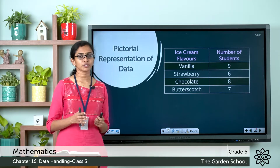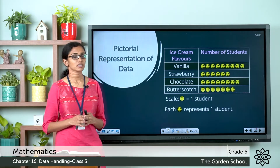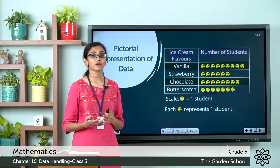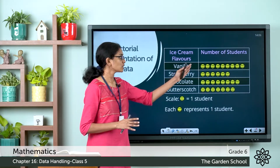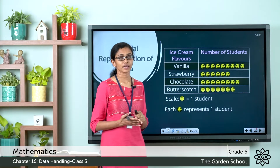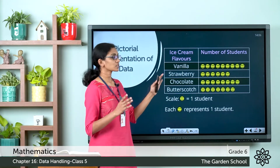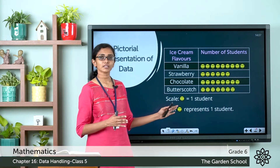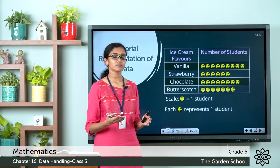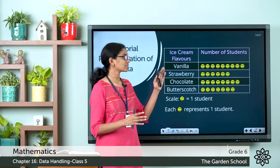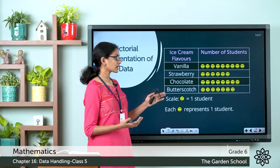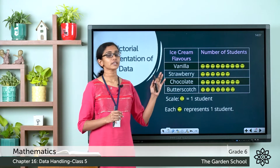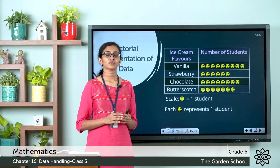Here you can see smiley faces — the number of students is now represented with smiley faces. For vanilla, which is the favorite flavor of 9 students, we have shown 9 smiley faces, each representing one student. So the scale of this representation is: one smiley face equals one student. The scale tells us the value represented by each symbol, and we have shown the number of students against each flavor using this symbol.